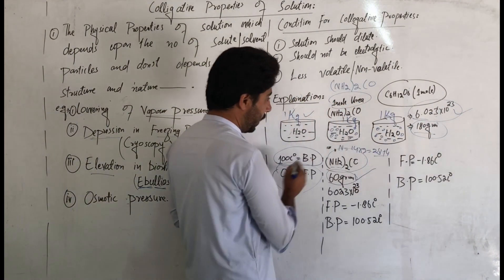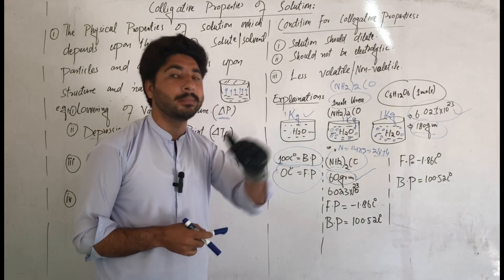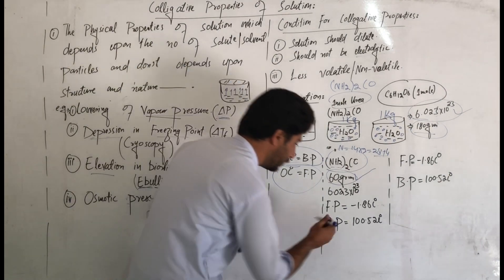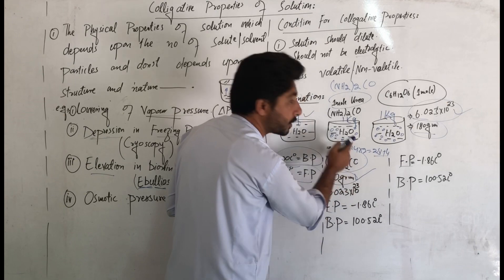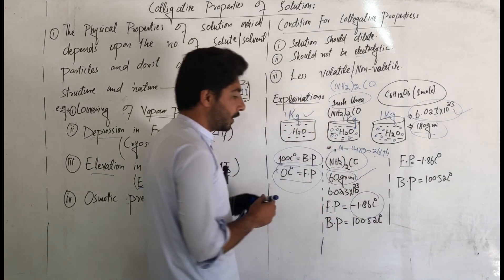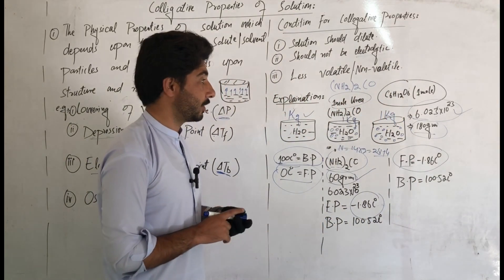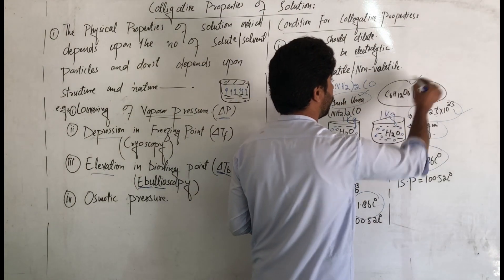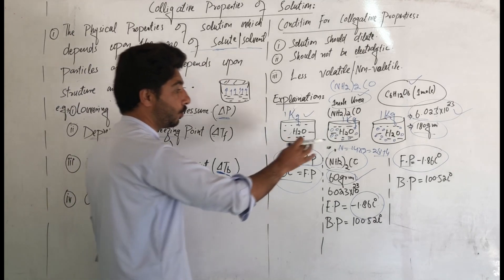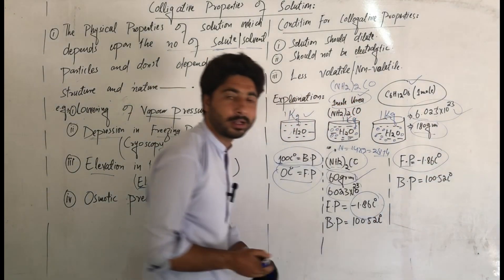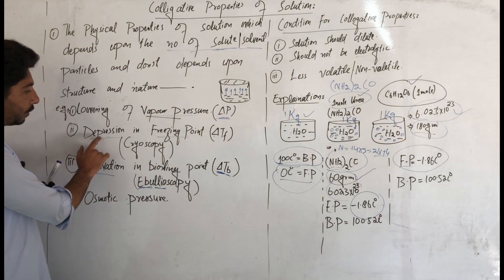So 180 grams is dissolved in 1 kg of water. When the solute is dissolved in water, the freezing point of pure water is 0 degrees centigrade. But when a solute is added, the solution's freezing point decreases. It becomes minus 1.86 degrees centigrade. This decrease in freezing point due to the number of solute particles is called depression in freezing point — also known as cryoscopy.